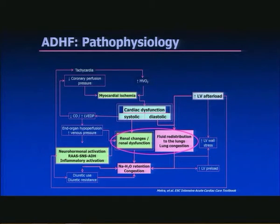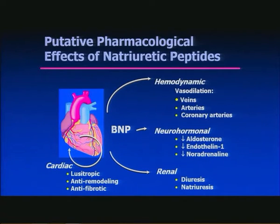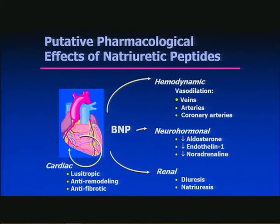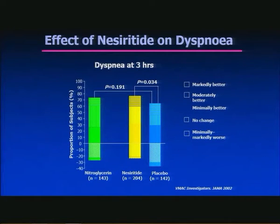Looking first at fluid redistribution and the natriuretic peptides: a stretched or overloaded heart releases BNP, which is overall a very beneficial molecule. It produces hemodynamic changes including vasodilation, beneficial neurohormonal changes, renal changes including diuresis and natriuresis, and cardiac changes including increased relaxation, anti-remodelling, and anti-fibrotic effects. Nesiritide is a synthetic BNP, and an early phase trial showed significant promise with a reduction in dyspnea at three hours.